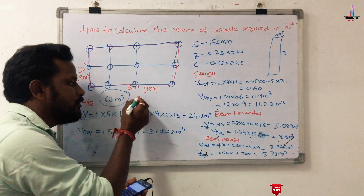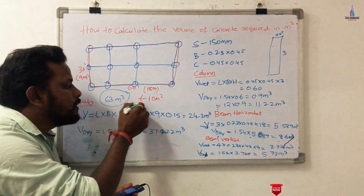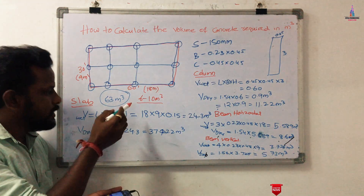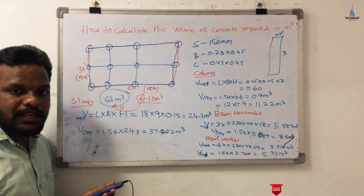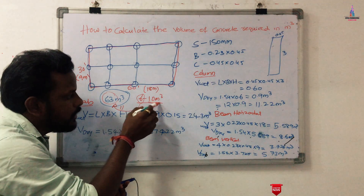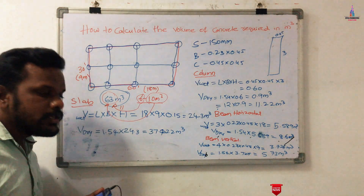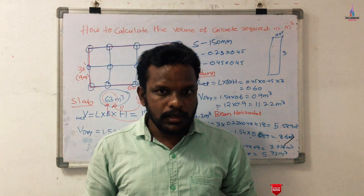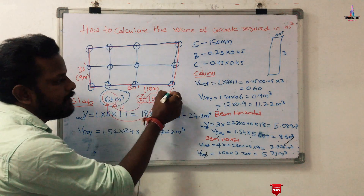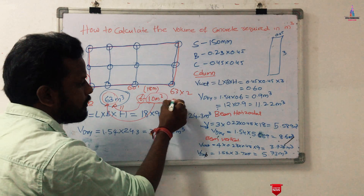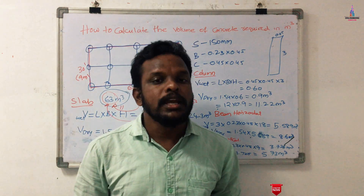One truck of ready-mix concrete holds approximately 6 to 10 cubic meters depending on vehicle size. For 63 cubic meters using 6 cubic meter trucks, approximately 11 trips are needed. Using 10 cubic meter trucks, approximately 6.5 trips are needed. For a G plus one building, multiply 63 by 2 to get approximately 126 cubic meters, requiring about 20 trips for the smaller vehicle.